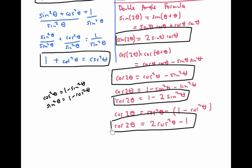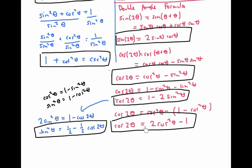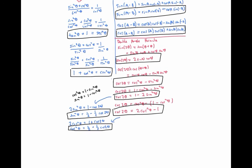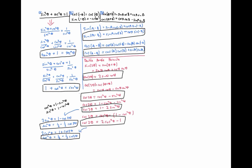The last two double angle formulas for cosine are particularly useful for integration when rewritten slightly. Solving for sine squared theta gives sine squared theta equals one half minus one half cosine of two theta. Solving for cosine squared theta gives cosine squared theta equals one half plus one half cosine of two theta. All these identities follow very naturally from the three core identities.